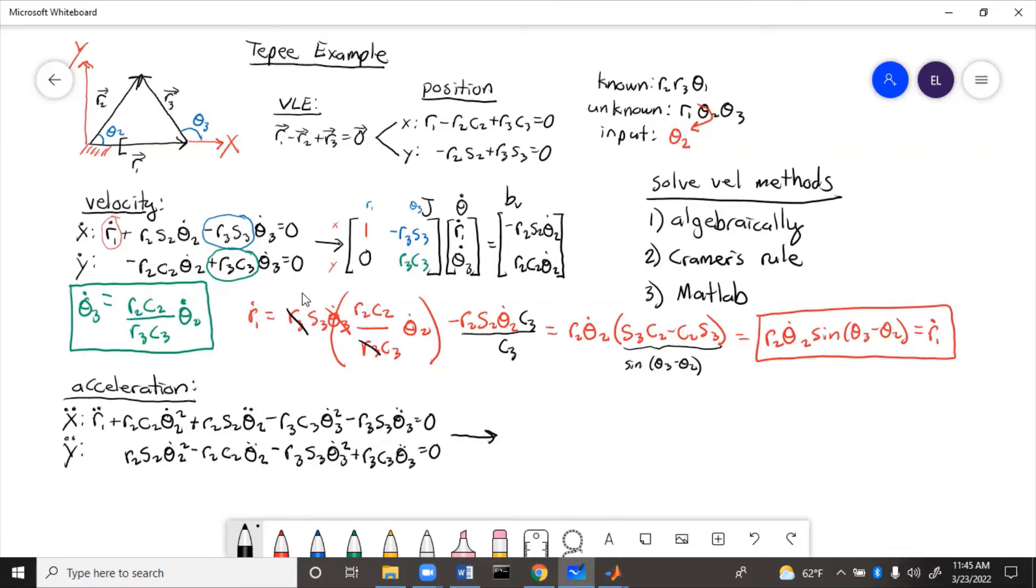So now we need to put these in matrix form. So that will follow the same J theta double dot equals B formula. Now J will be the exact same, theta dot will become theta double dot, and then B will be everything else. So let's fill that out.